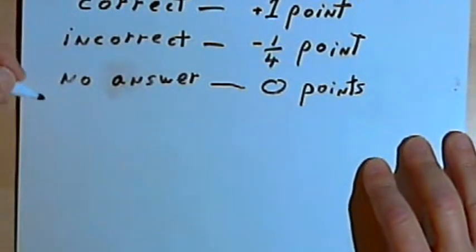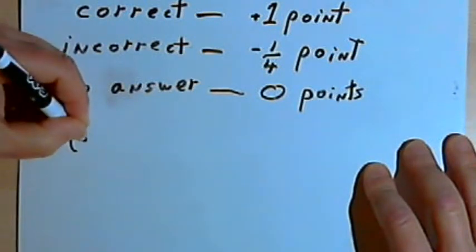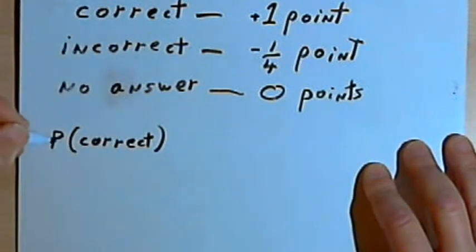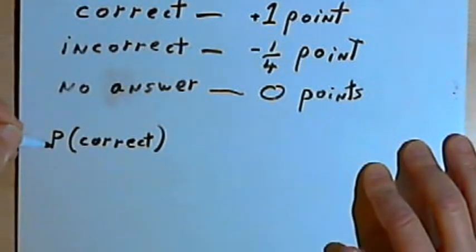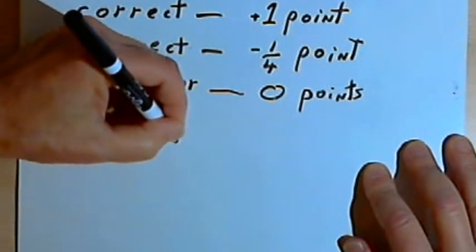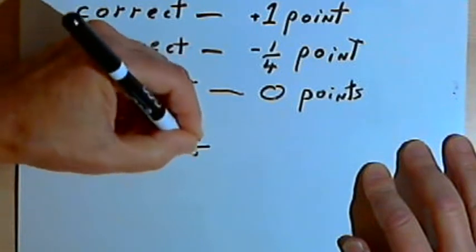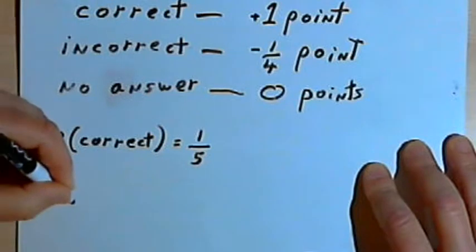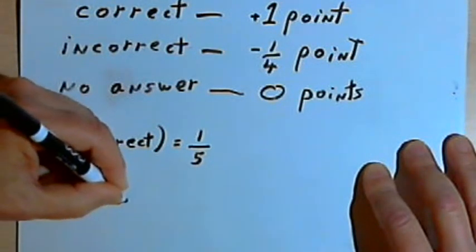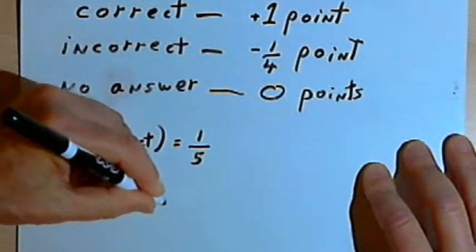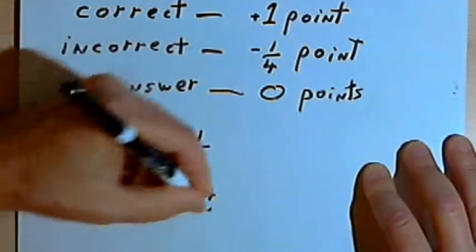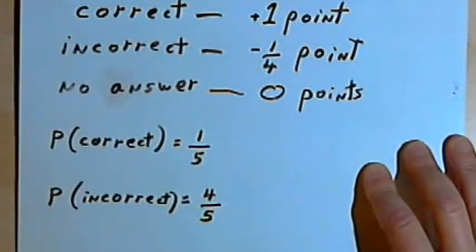What we're going to do is figure out the probability of getting correct answers and also the probability of getting incorrect answers. The probability of a correct answer, if there are five different choices and you have no idea which is correct, is one correct answer over five possible choices. The probability of an incorrect answer is four incorrect answers over five possible choices.